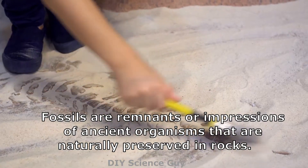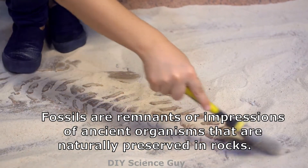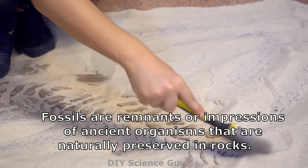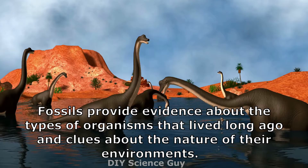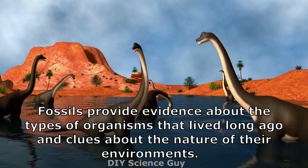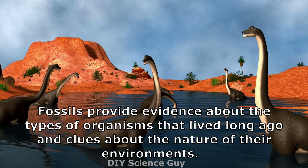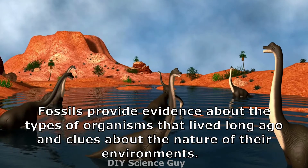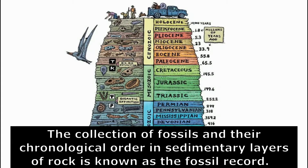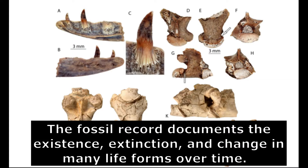Fossils are remnants or impressions of ancient organisms that are naturally preserved in rocks. Fossils provide evidence about the types of organisms that lived long ago and clues about the nature of their environments. The collection of fossils and their chronological order in sedimentary layers of rock is known as the fossil record. The fossil record documents the existence, extinction, and change in many life forms over time.